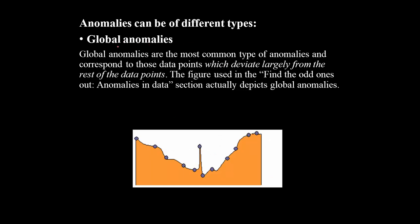There are different types of anomalies. One is global anomalies — these are the most common type. Global anomalies deviate largely from the rest of the data points. In the example shown, one data point is quite far away from all others. It's not just about distance though — a data point can be different from others in various ways, not just linearly but also non-linearly, and not just by a single variable but by multiple variables as well.